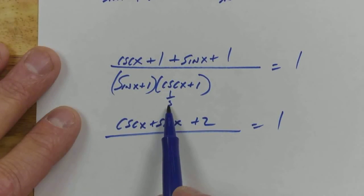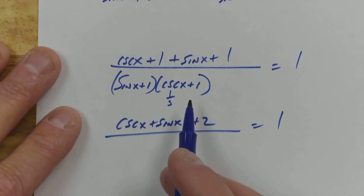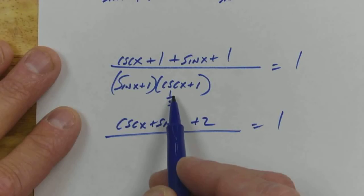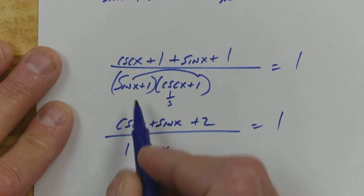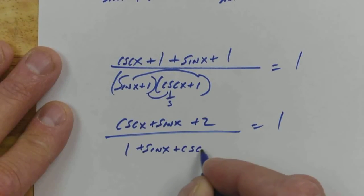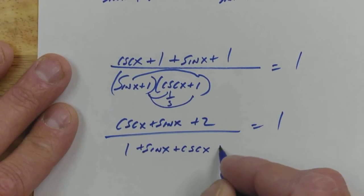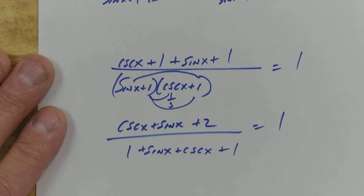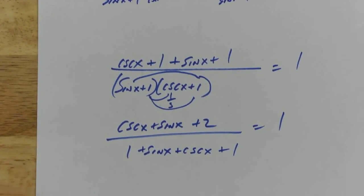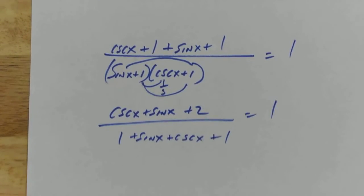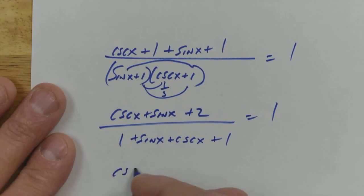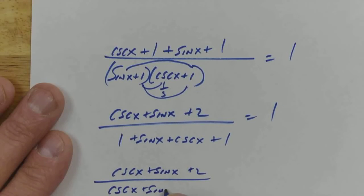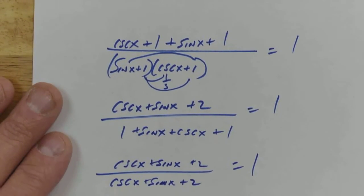Sine x times cosecant, what do we get? Sine x times 1 over sine gives me 1. Sine x times 1, 1 plus cosecant, and then plus 1. So now the top and bottom are both ugly, but they're both the same kind, exact kind of ugly. So I was thinking that we had to beautify it, but we really don't have to. And anything over itself is 1.